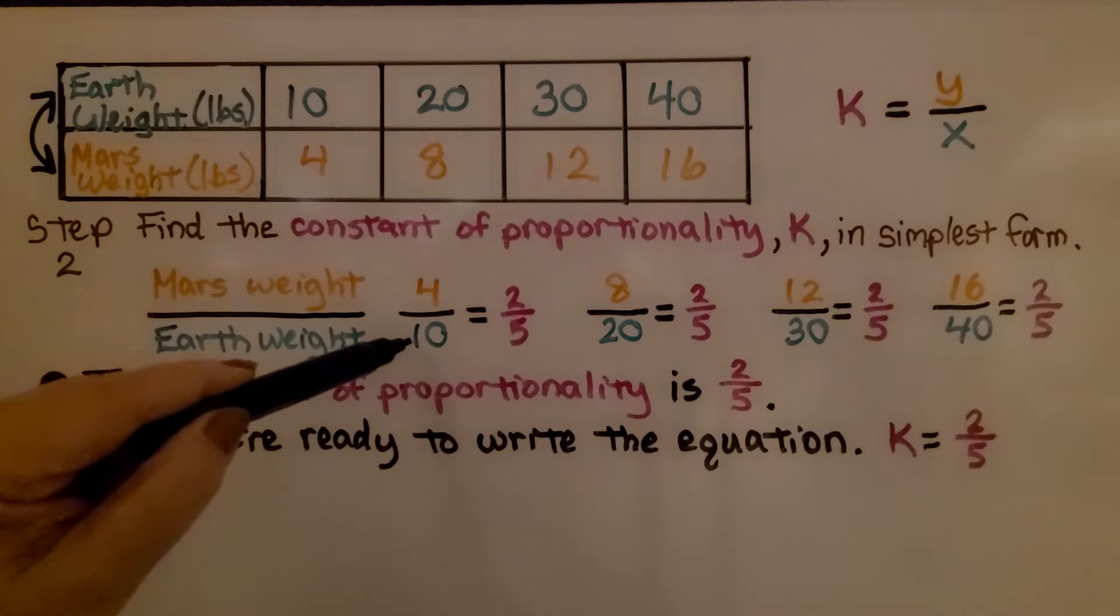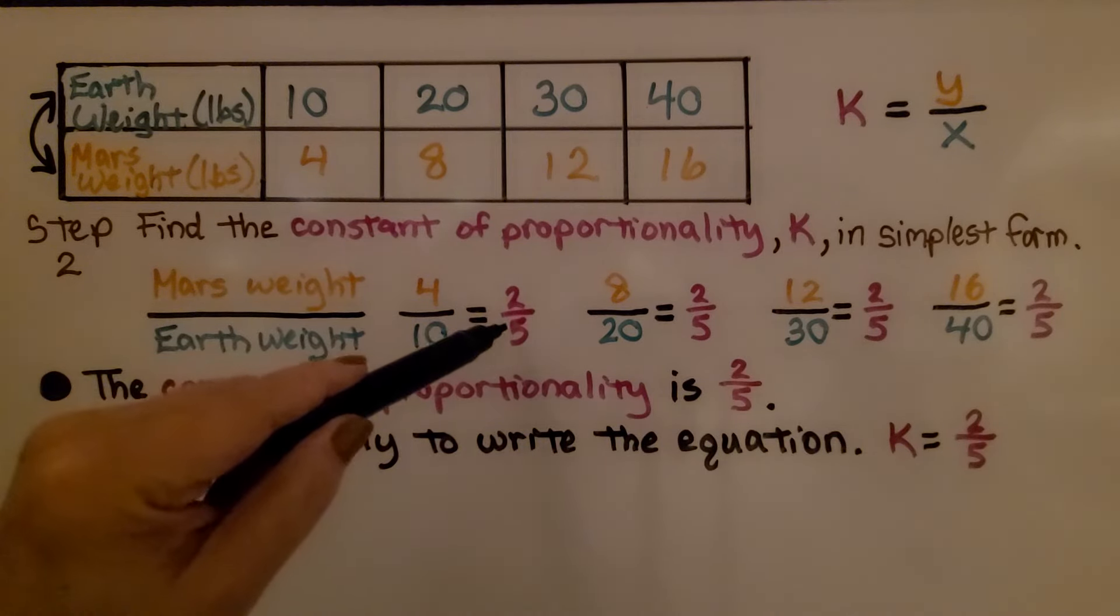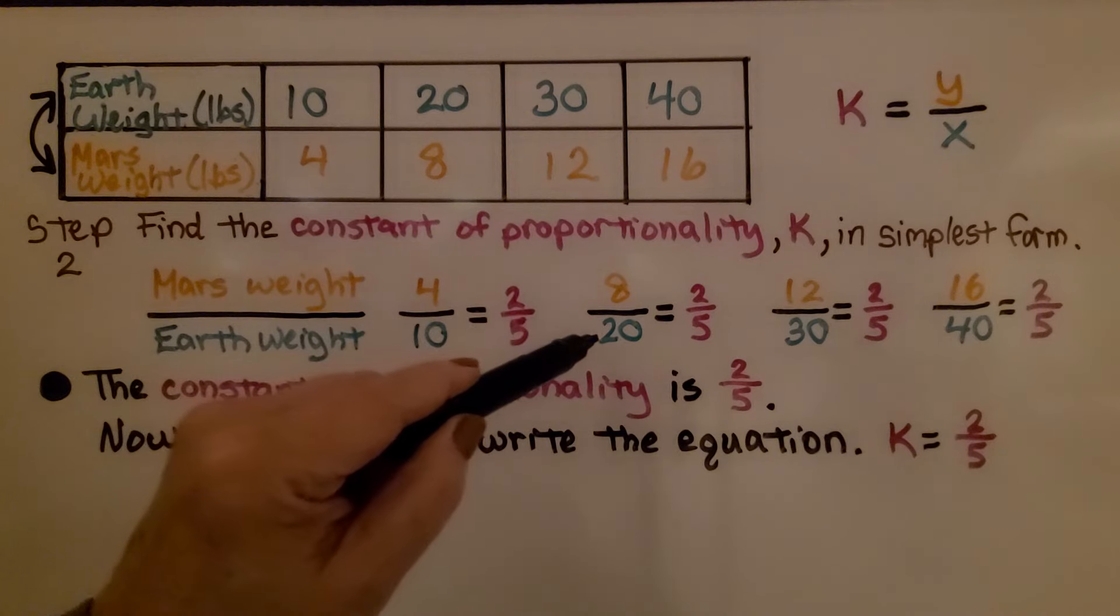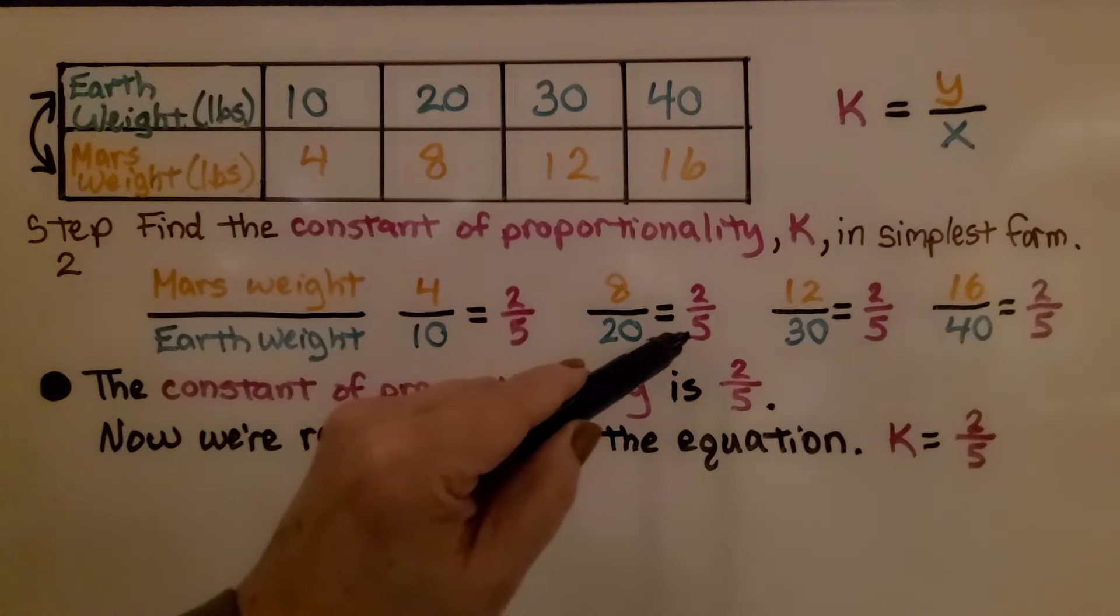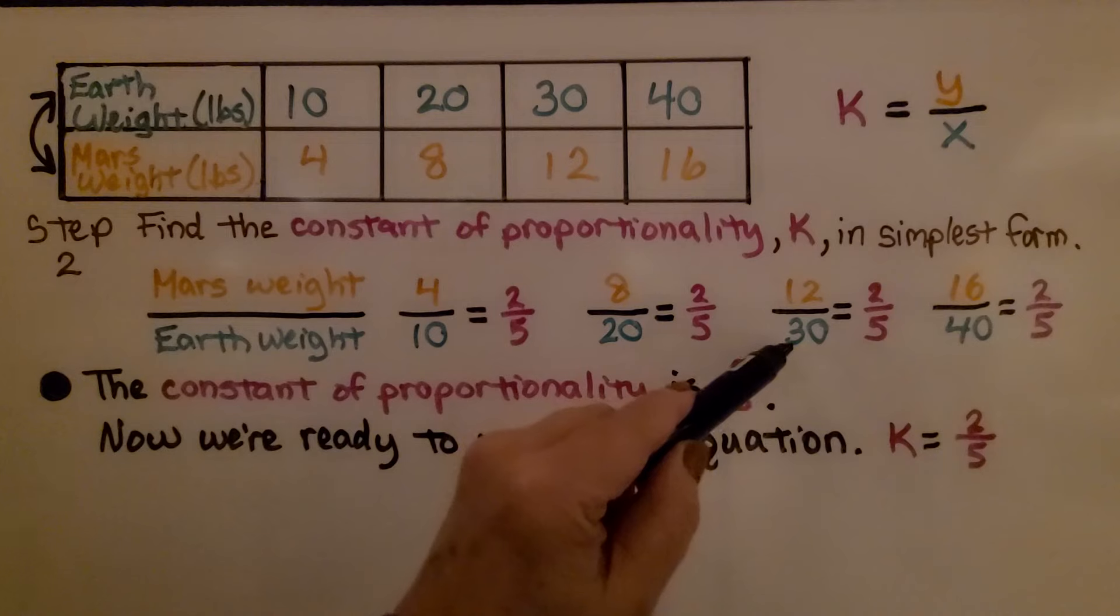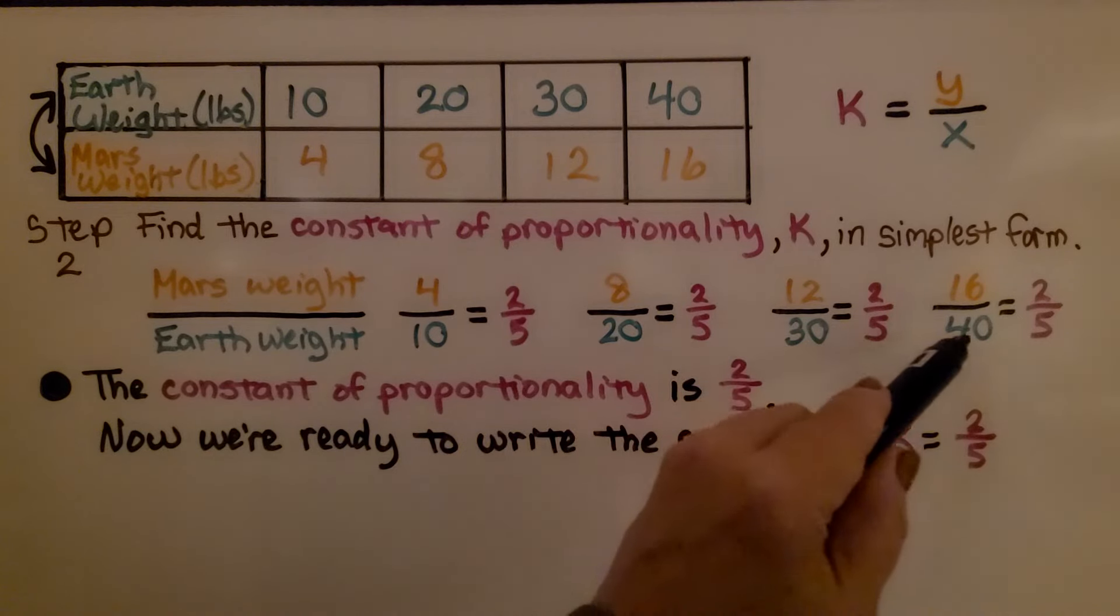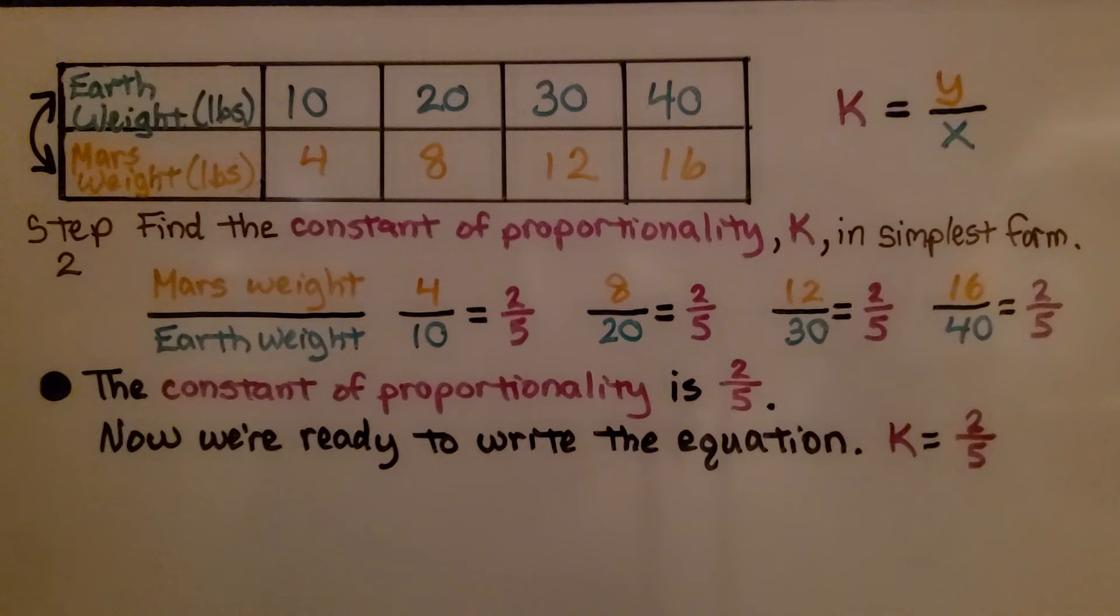That means we have 4/10, which simplifies to 2/5, and 8/20 simplifies to 2/5, and 12/30 simplifies to 2/5, and 16/40 simplifies to 2/5.